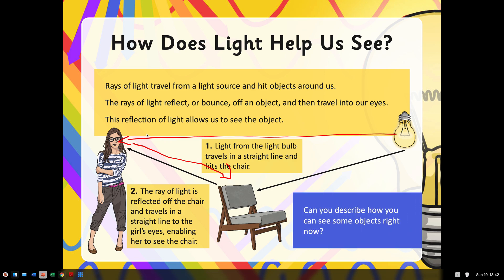Can you describe how you can see some objects right now? For example, I've got a photograph next to me on my right. The light source is above me, so it's going from the light source to the photograph, and then it's bouncing off of the photograph into my eye.